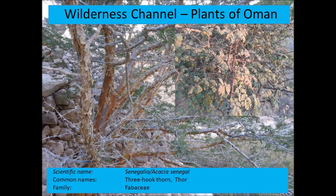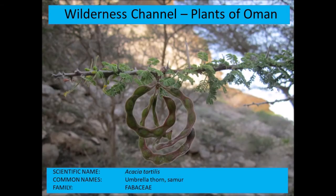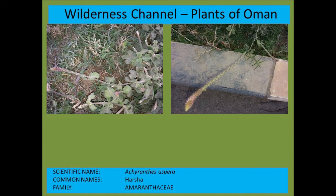The first plant is Senegalia senegal, or Acacia senegal as it was previously known — the three-hook thorn, because it has three thorns at each node, from the family Fabaceae. This is the characteristic umbrella thorn of Africa and the Arabian Peninsula. Acacia tortilis is also from the Fabaceae.